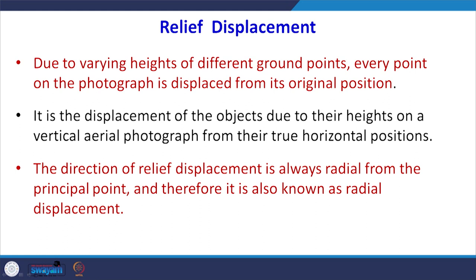It could be a tower, it could be a house, it could be any other structure. Due to the height of that, we find its image is displaced from its true planimetric position. This direction of displacement — what we call relief displacement — is radial from the principal point. We know how to locate the principal point on the photograph, so radially if we measure the distance, we can calculate how much relief displacement is present.